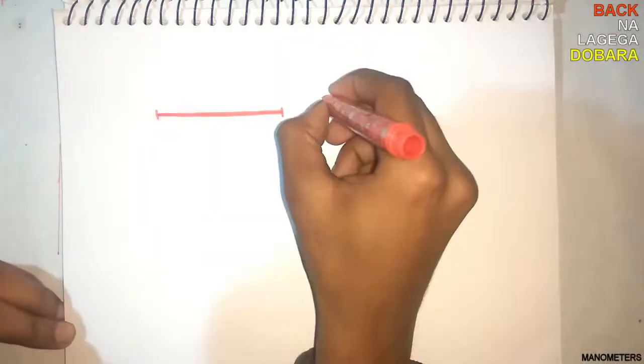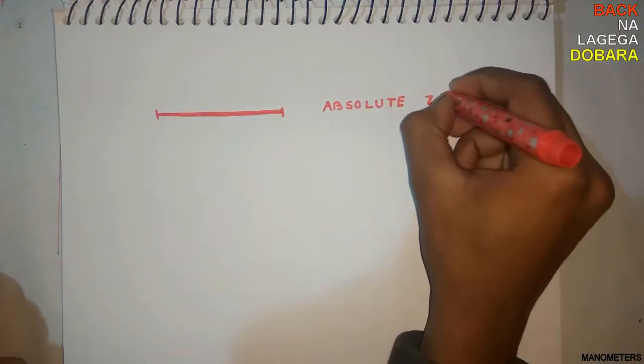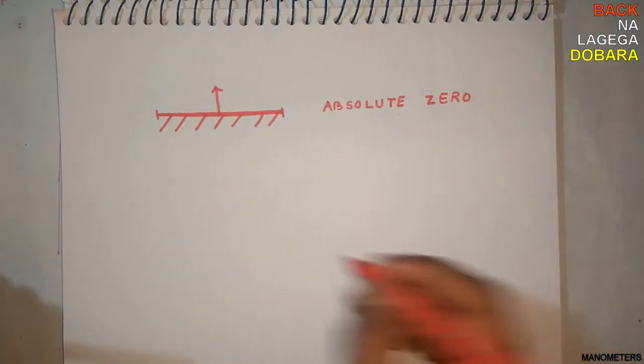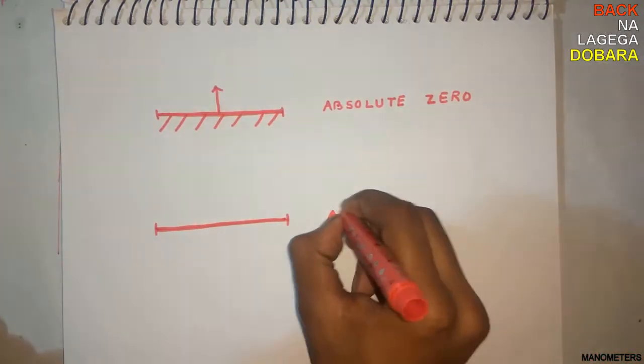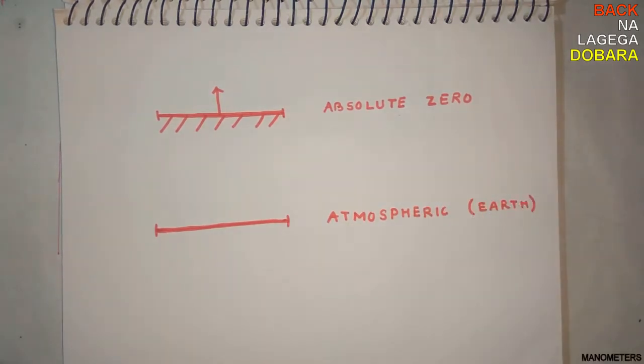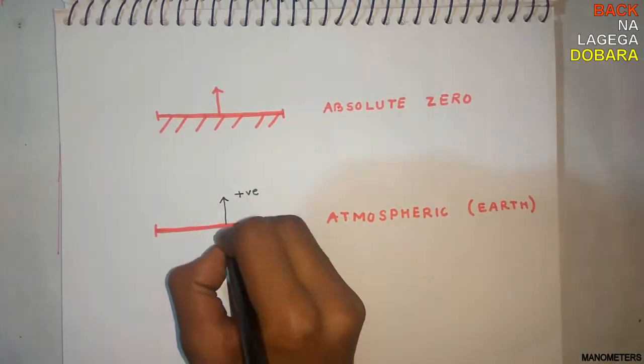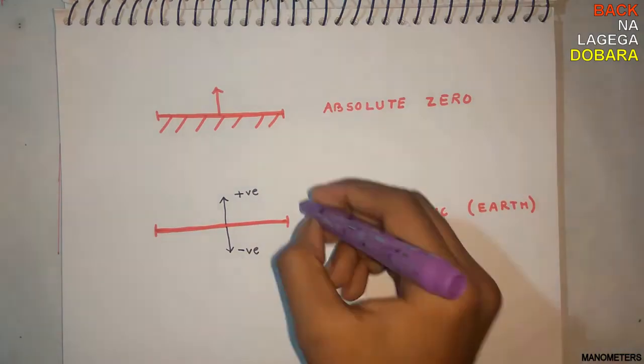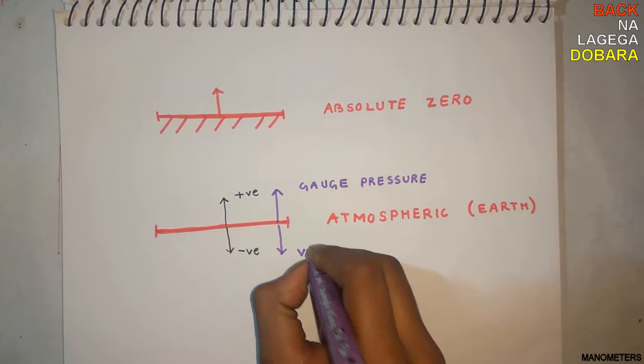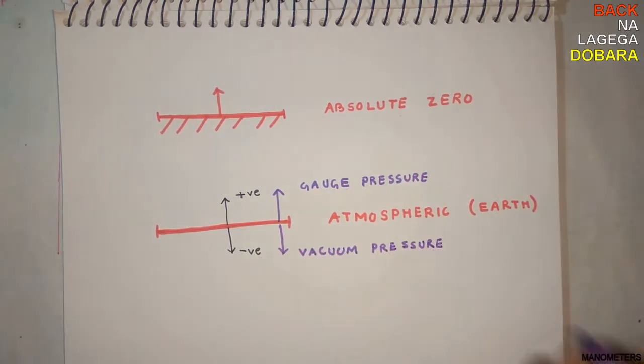First we discuss how we represent pressure. There are two references mainly: the absolute zero reference and the atmospheric pressure reference. The positive is called the gauge pressure and the negative part is called vacuum pressure, like the Celsius scale in measuring temperature. If we further go down on the negative side, we will reach an absolute zero level or the space.